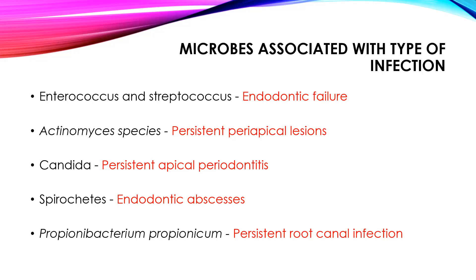For persistent root canal infection, you can expect P. propionicum, Candida, and Actinomyces species, whereas in cases of endodontic failure, you will be able to isolate Enterococci and Streptococci.